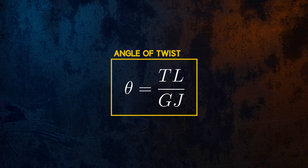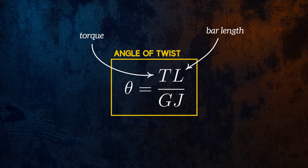the applied torque T, the shear modulus G, which is a material property, and J, which is the polar moment of inertia.